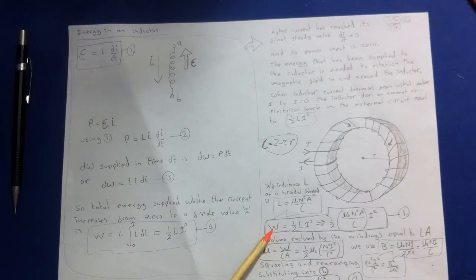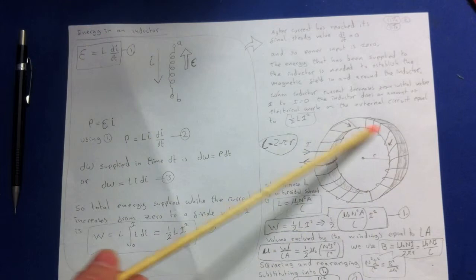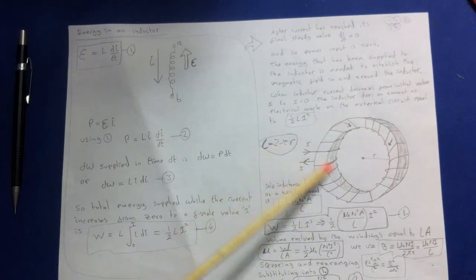So to get the energy density, energy per unit volume, we think of this energy W localized in the volume enclosed by the windings equal to L, obviously the total circumference or area, 2πR times A, this cross-sectional area.